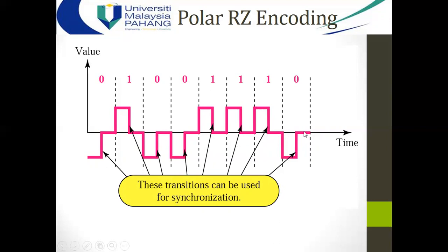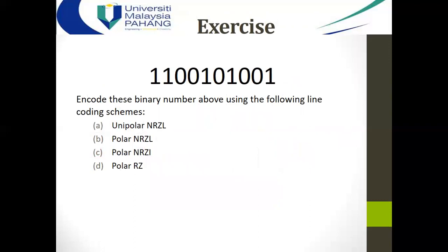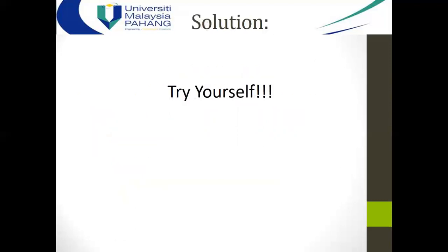So transitions can be used for synchronization and at the same time to recognize the bits as either zero or one. As an exercise, for the bit string 1 1 0 0 1 0 1 0 0, you can draw the line coding waveforms for: unipolar, NRZ-L, polar NRZ-L, polar NRZ-I, and polar Return-to-Zero. You can try this yourself.